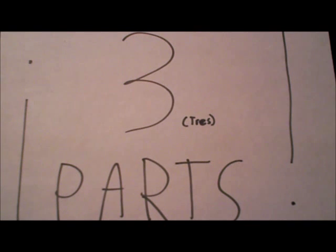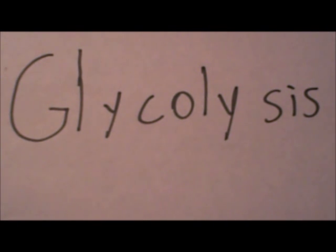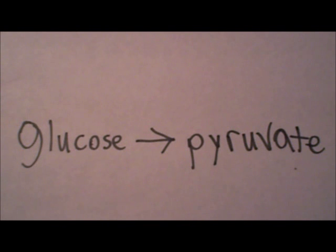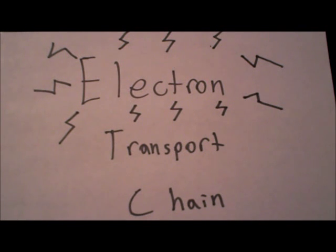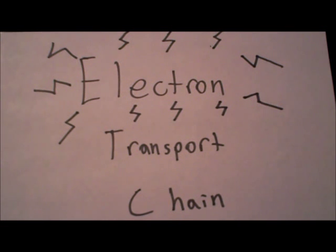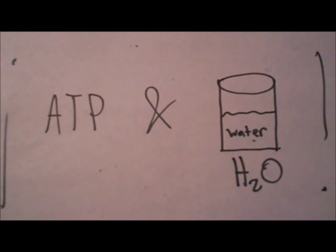Carb catabolism goes through three parts. The first part is glycolysis, which turns glucose into pyruvate. The TCA, or Krebs cycle, is when pyruvate is turned into acetyl CoA, which is used to make more ATP. Last but not least of carb catabolism is the electron transport chain — or ETC. It's when hydrogen from the glycolysis and the TCA cycle enter the electron transport chain to make ATP and water, or H2O if you want to be scientific about it.